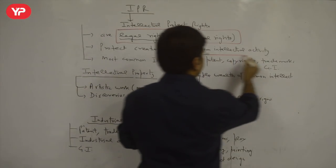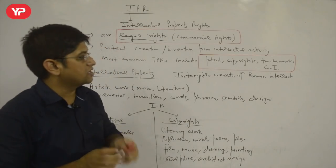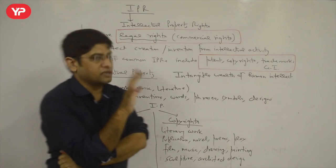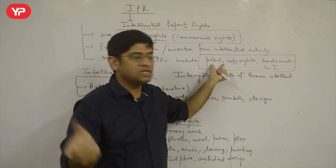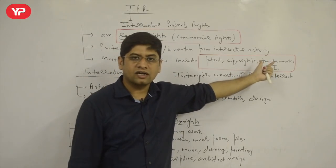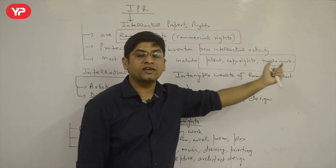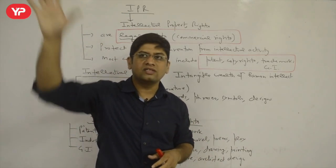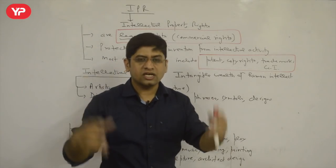Most common IPRs — remember these names: patent, copyright, trademark, and geographical indicators. Each has a slight difference. Patent is for a machine or invention; copyright is for a book; trademark is the mark you put on your trade — like an ISI mark — that becomes your branding. Geographical indicators are things like Basmati rice, Darjeeling tea, Swiss watch — a specialty associated with a particular place.